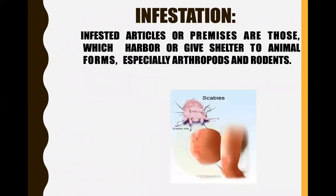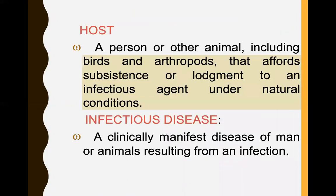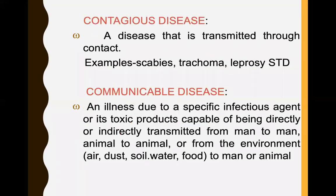Infestation: infested articles or premises are those which harbor or give shelter to animal forms, especially arthropods and rodents. Host: a person or other animal, including birds and arthropods, that affords subsistence or lodgment to an infectious agent under natural conditions. Infectious disease: a clinically manifest disease of man or animal resulting from an infection. Contagious disease: a disease transmitted through contact — examples include scabies, trachoma, leprosy, and STDs.